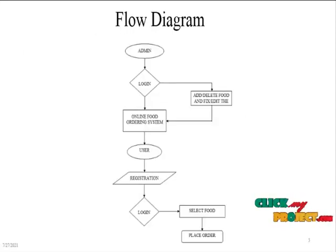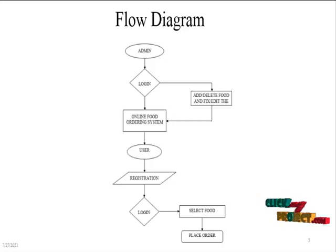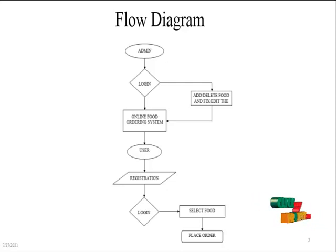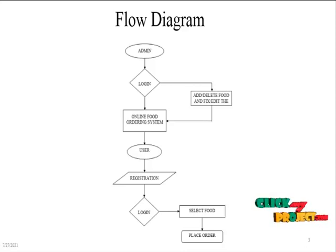The flow diagram of the project shows the running flow of the modules. In this project there are two sets of modules. The first module is the admin module, and the other is the user module. The admin module consists of login details and control of the website, and the user module consists of registration and login.